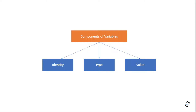Identity refers to the memory location of the variable. If you write a variable in Python, Python assigns an ID in the back end — that ID points to where the variable is stored in memory. Next is the type.